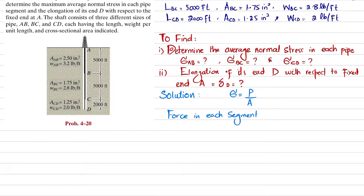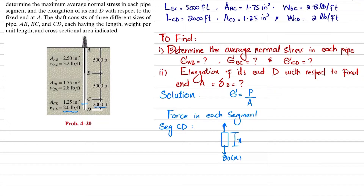I will take the first segment, CD. When we draw the free body diagram, we cut at point C. There is a distributed weight acting downward. The weight per unit length is 2 lb/ft, so for a cut at distance x, the weight is 2x. To maintain equilibrium, the internal force P(x) equals 2x. So the load in segment CD is P(x) = 2x.